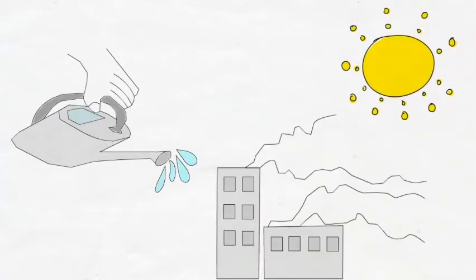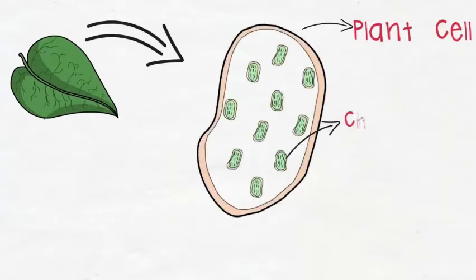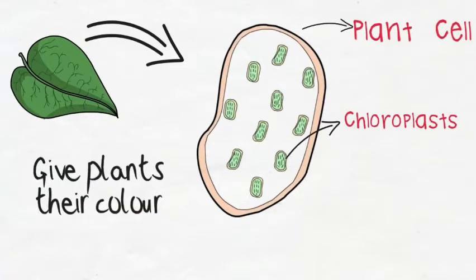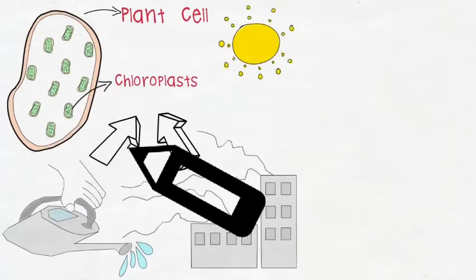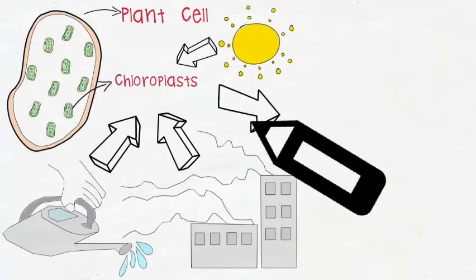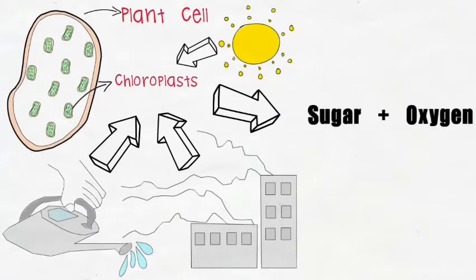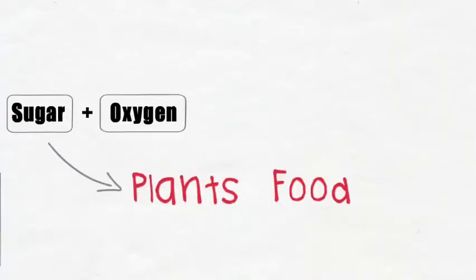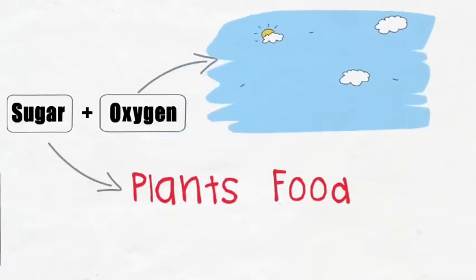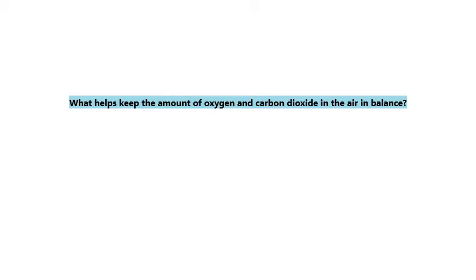Once plants have both water and carbon dioxide, they need one key ingredient: light. The leaves of a plant contain tiny things called chloroplasts. Chloroplasts give leaves their green colour. However, chloroplasts also take carbon dioxide, water, and light, and turn them into sugar and oxygen. This sugar is the plant's food. The oxygen, on the other hand, is released back into the atmosphere.